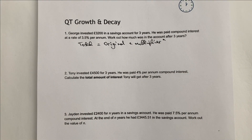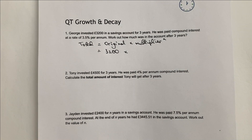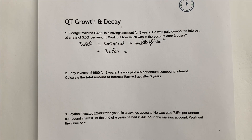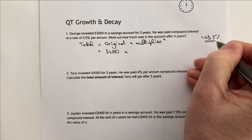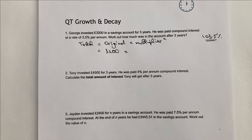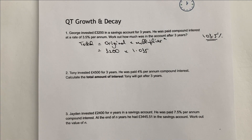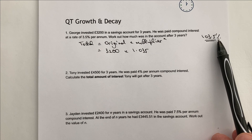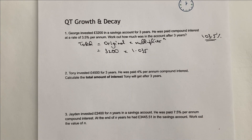N is the number of years, multiplier is the interest rate, and original is the original 3,200. So let's put those numbers into place: 3,200 multiplied by the multiplier. Bearing in mind it's compound interest at 3.5% per annum, each year he's going to get 103.5%. We can't easily work with percentages in this kind of question, so we convert it to the decimal equivalent, which is 1.035 — because this means out of a hundred, moving the decimal point two places gives you 1.035.